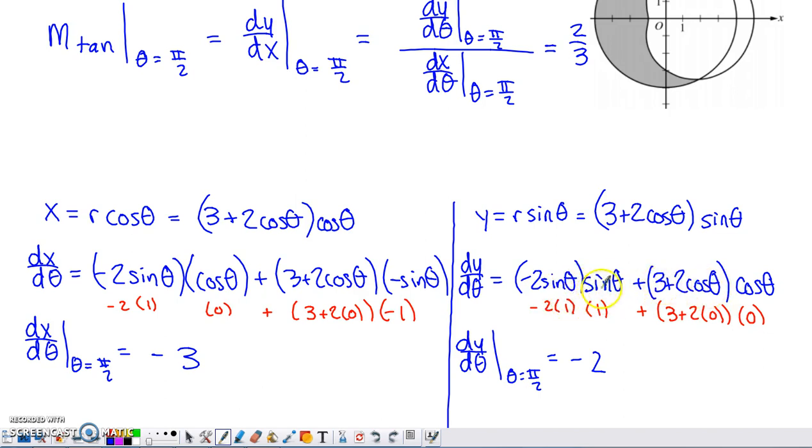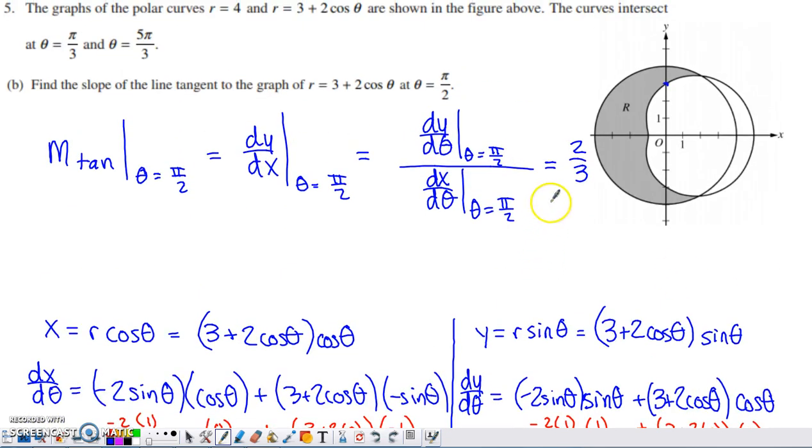I evaluated these at π/2. Sine of π/2 is 1, cosine of π/2 is 0. Once again, I simplified that to negative 2. If I take dy/dθ divided by dx/dθ, I get negative 2 divided by negative 3, which simplifies to 2/3, which matches what we discussed when looking at this graph.